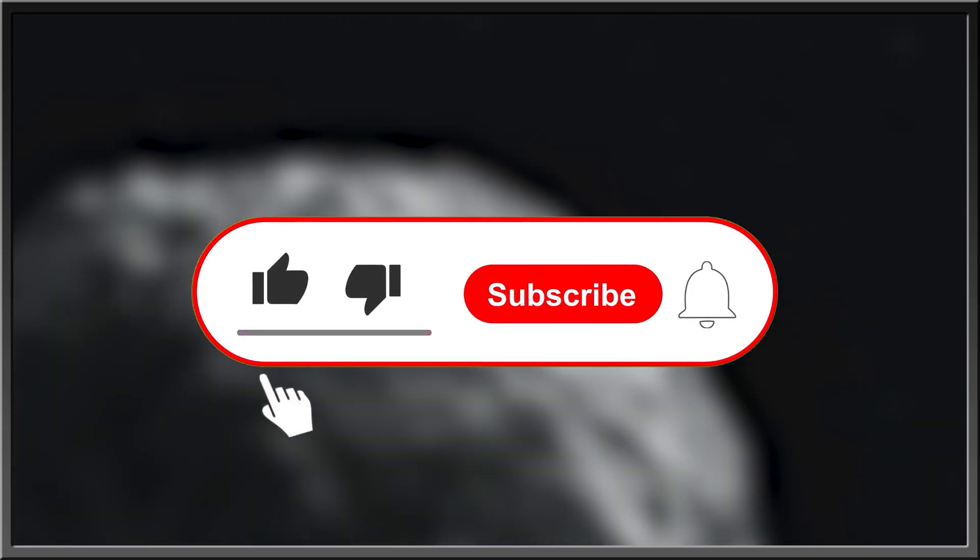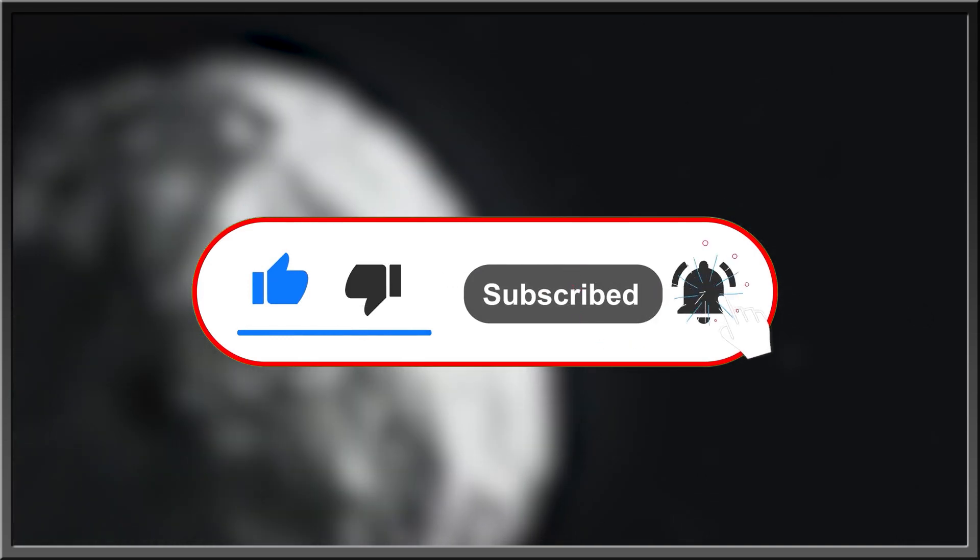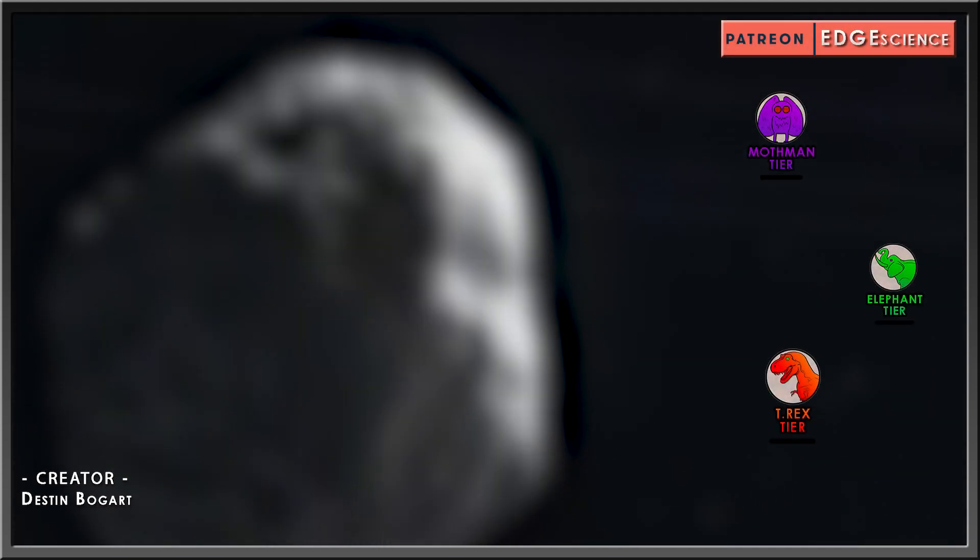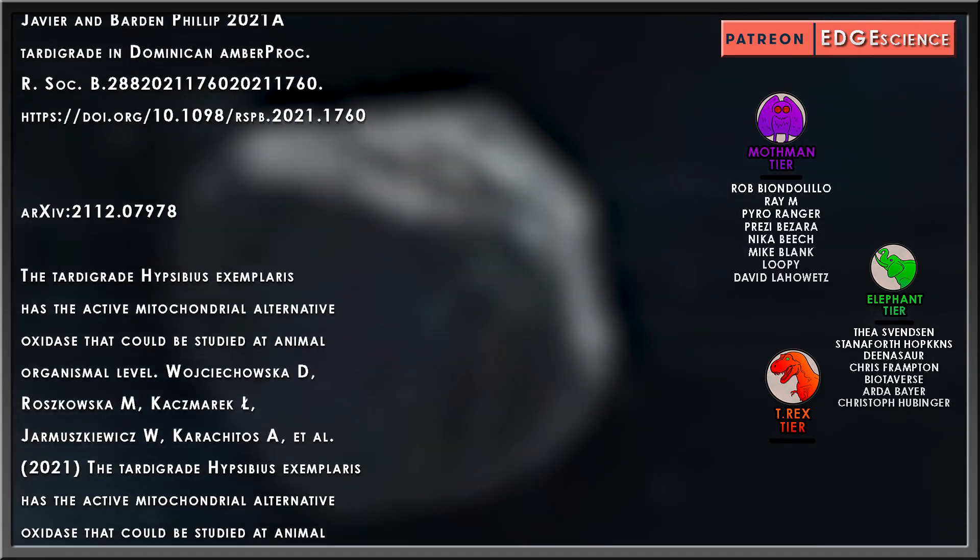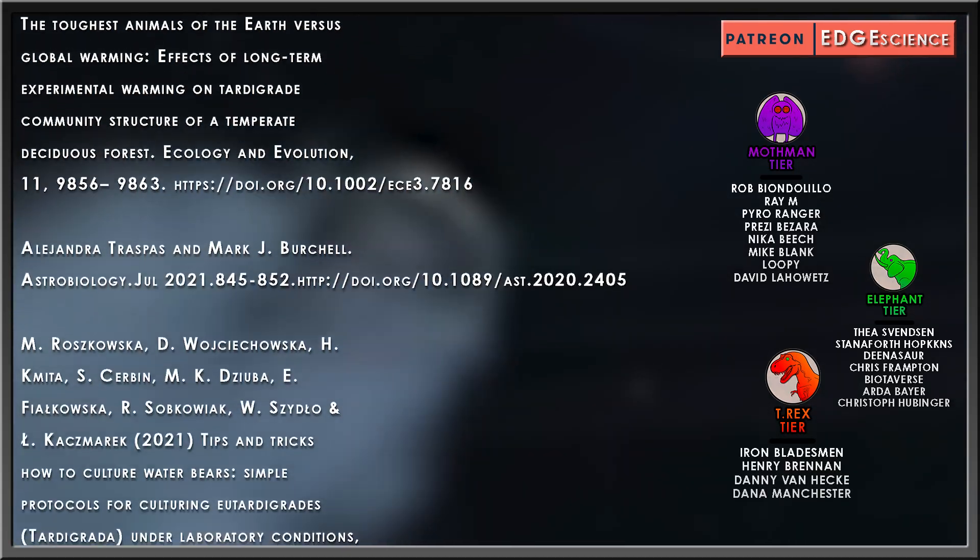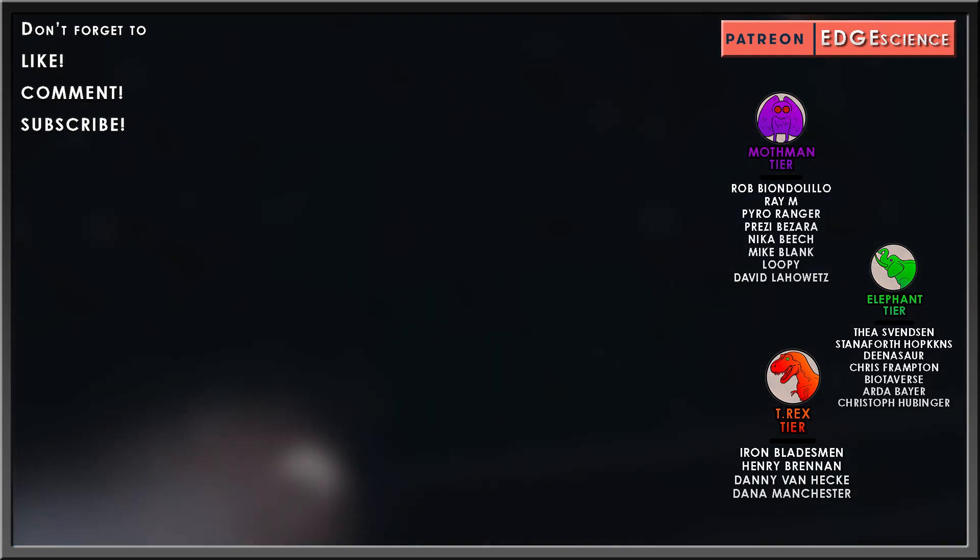So that's been the top 10 tardigrade discoveries of 2021. Wonder what else will be found out about these amazing little beasts in 2022. For more interesting stories about nature, the history of life, or what goes bump in the night, subscribe, hit the bell icon for updates, like this video and drop a comment in the comment section below. Thanks for watching. Special thanks goes to my elephant tier patrons Fia Svensson, Staniforth Hopkins, Dinosaur Chris Frampton, Biotaverse, Arda Bayer and Christoph Hubinger, as well as my Tyrannosaurus patrons Iron Bladesman, Henry Brennan, Danny van Heck and Dana Manchester.